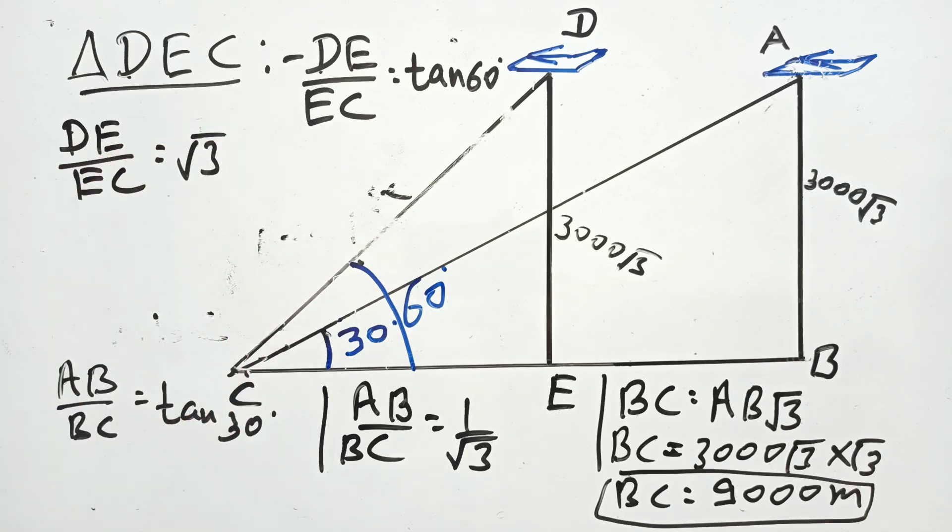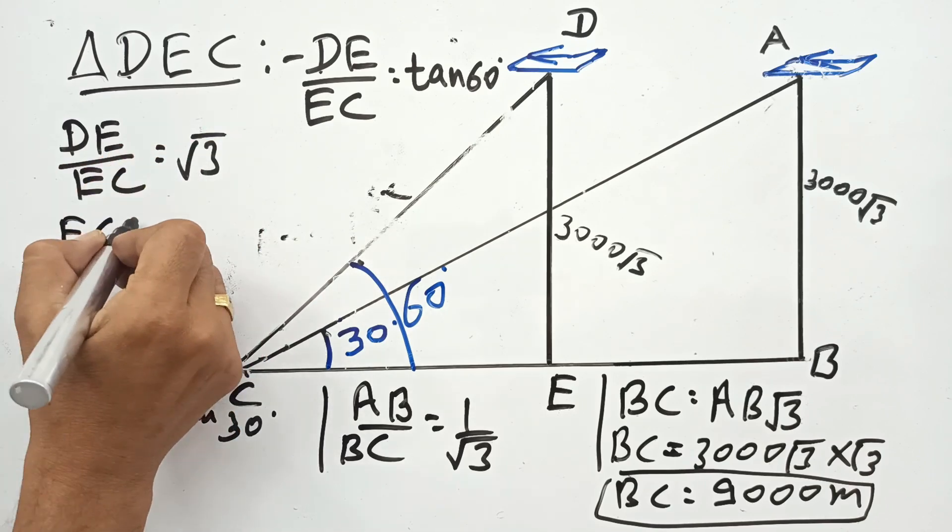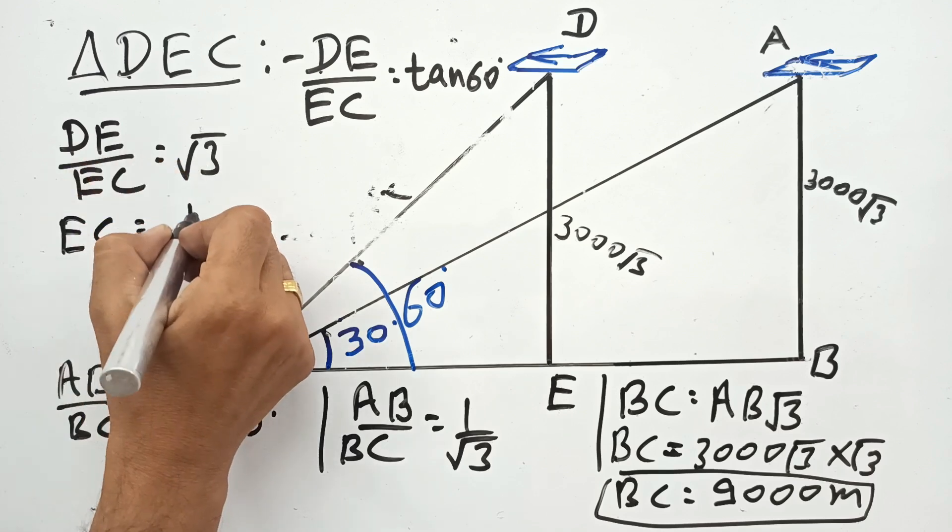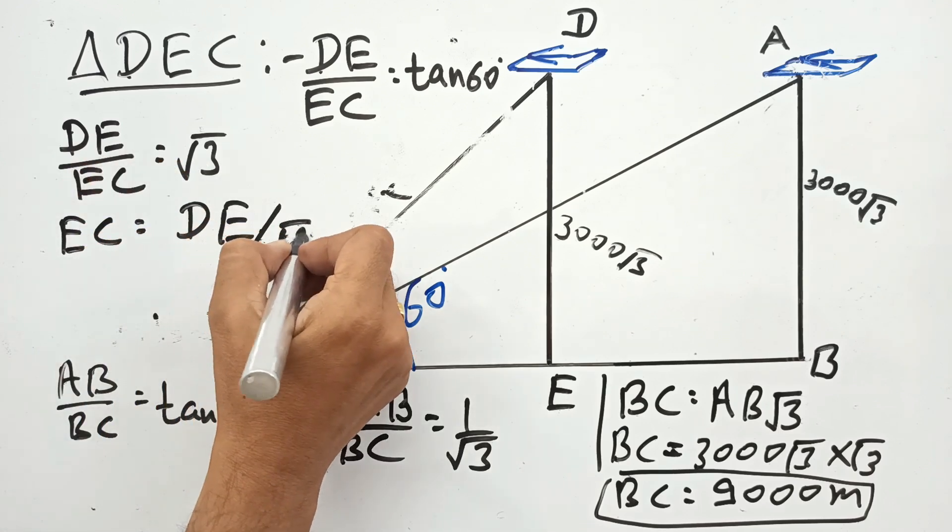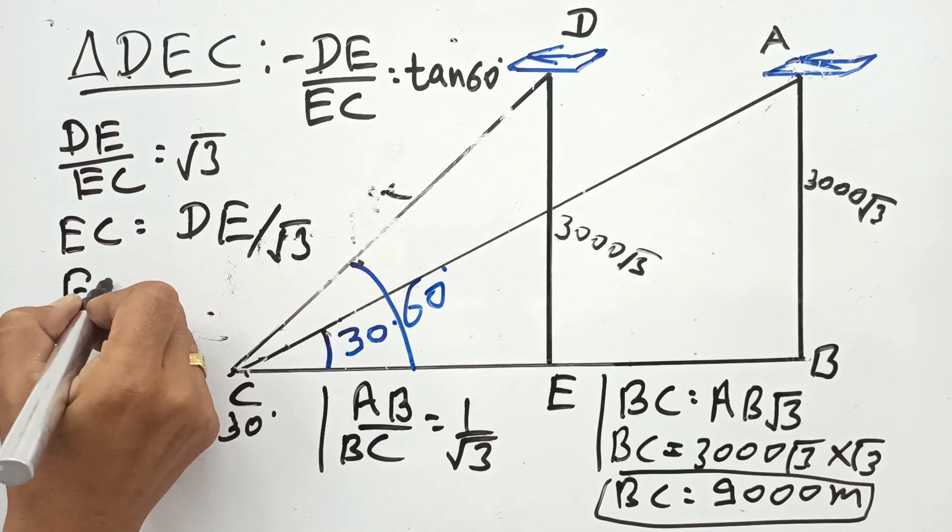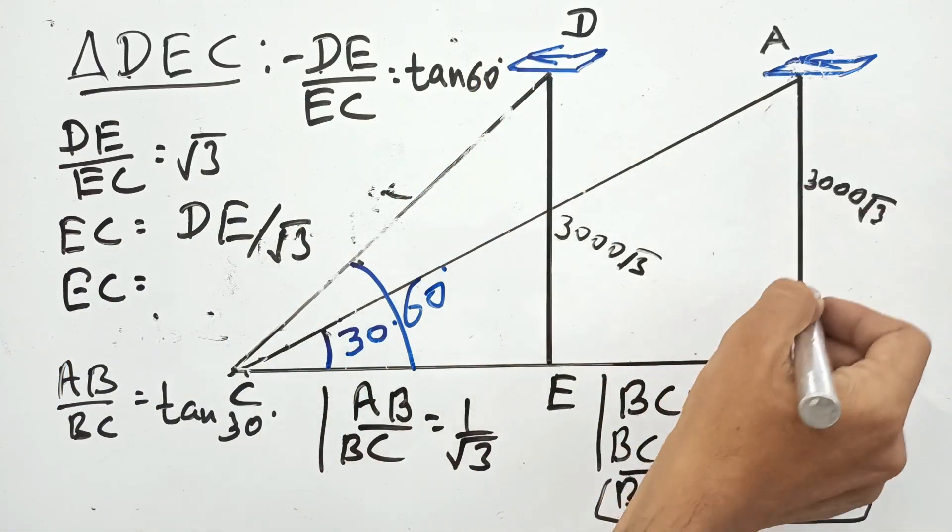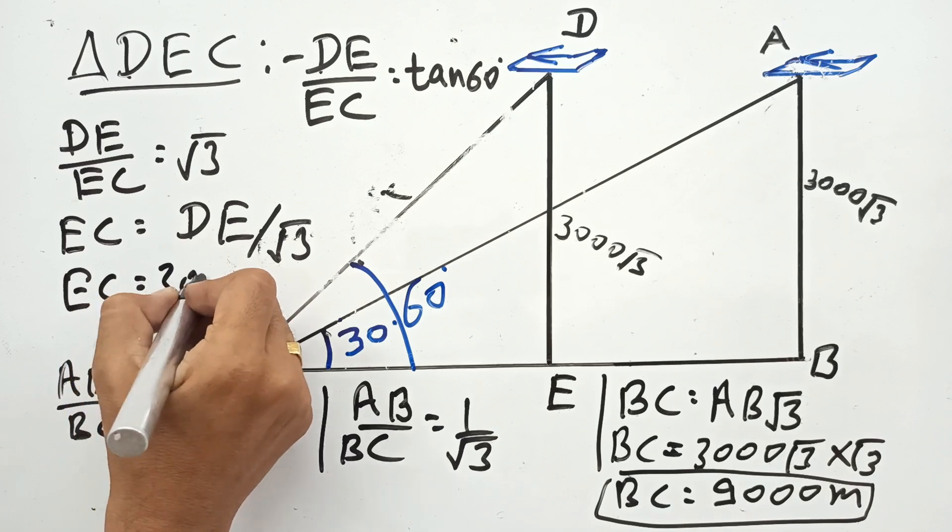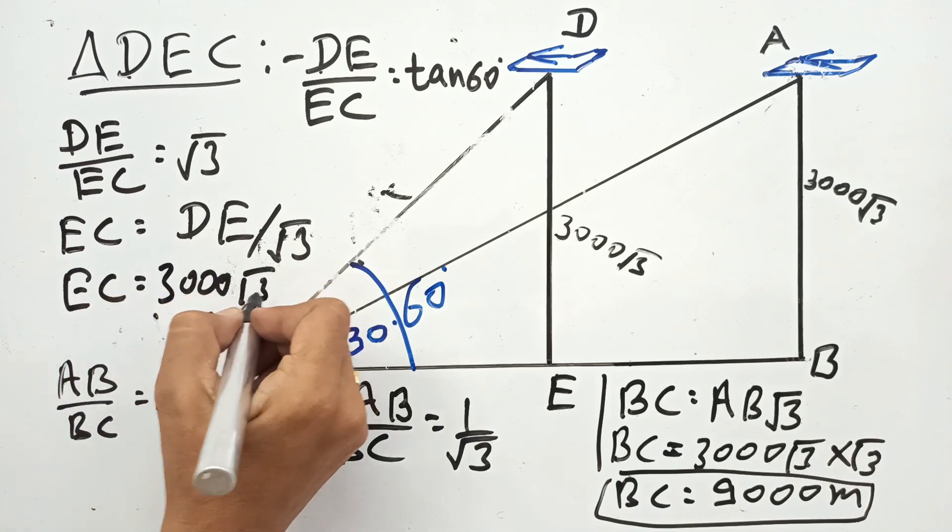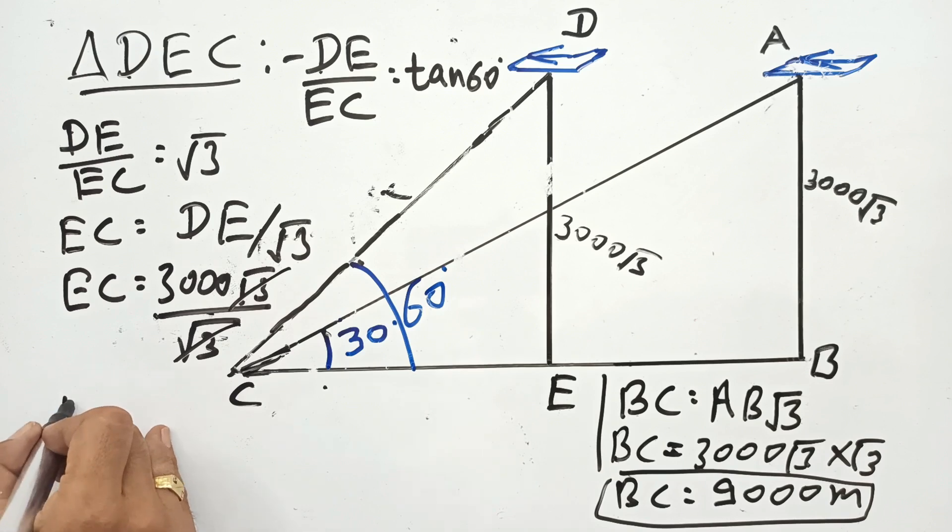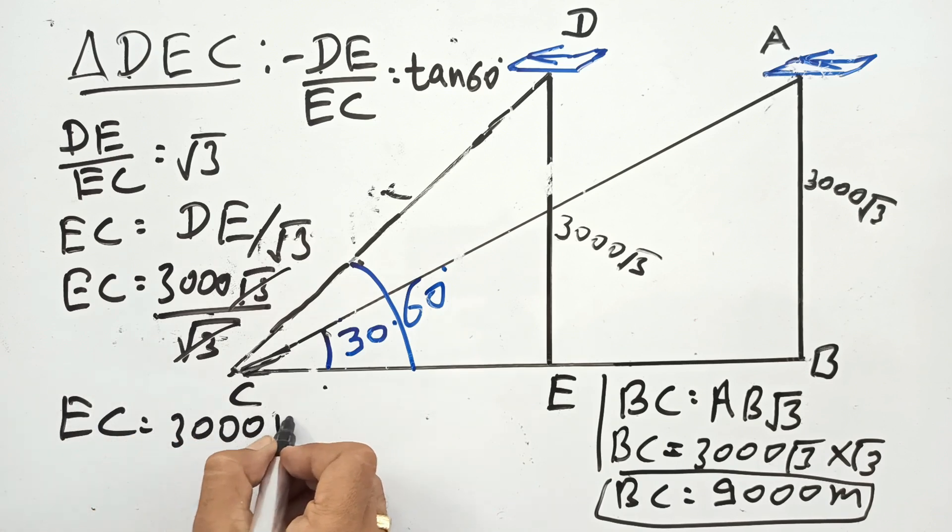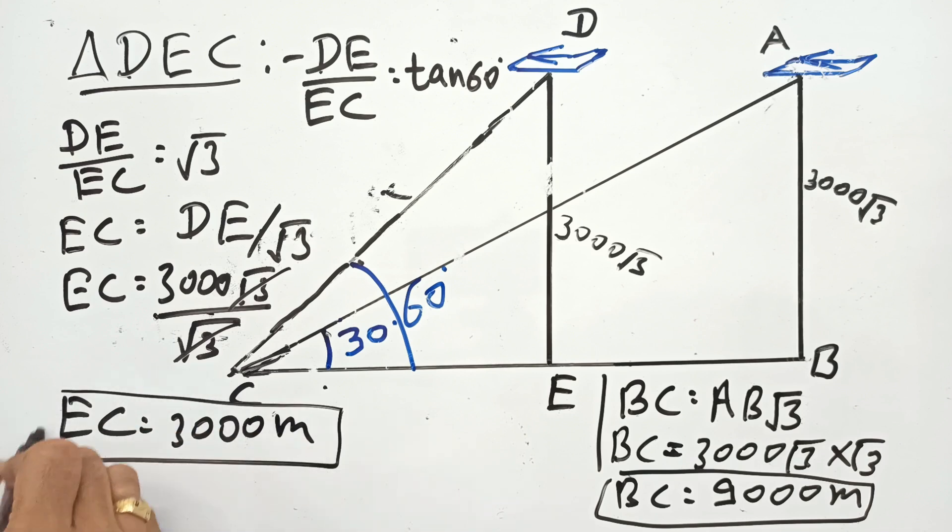DE upon EC, tan 60 is √3. EC will be DE upon √3. DE is the same height as AB, 3000√3. √3 upon √3 cancels, so EC equals 3000 meters.